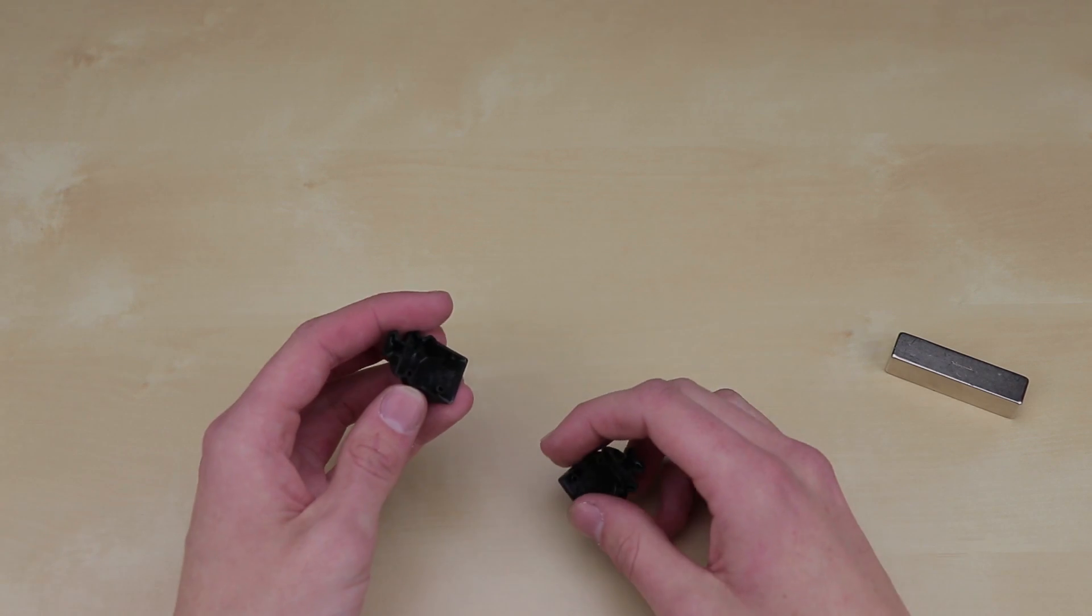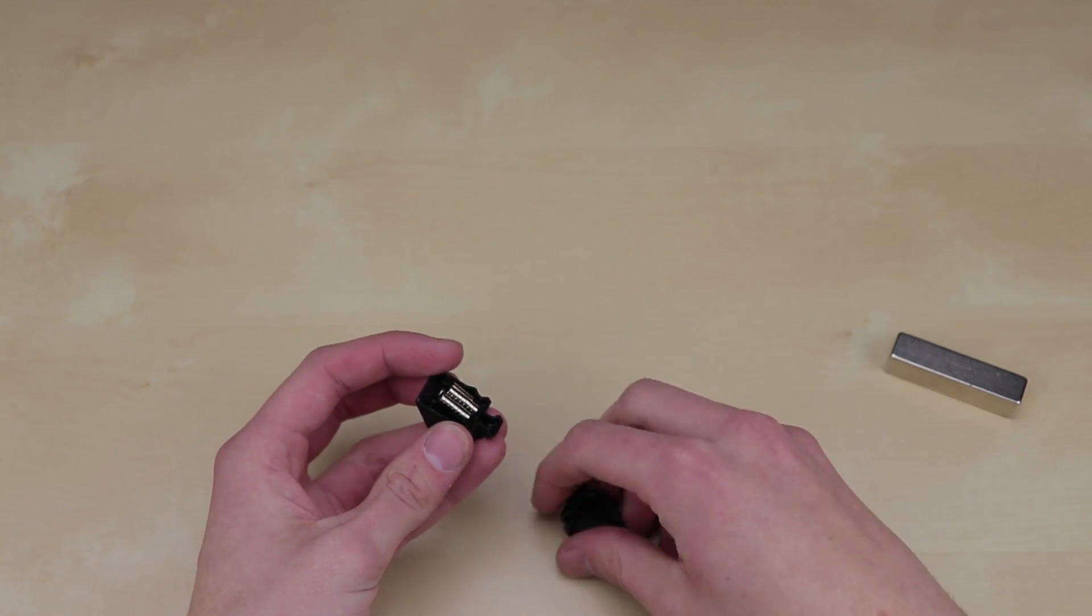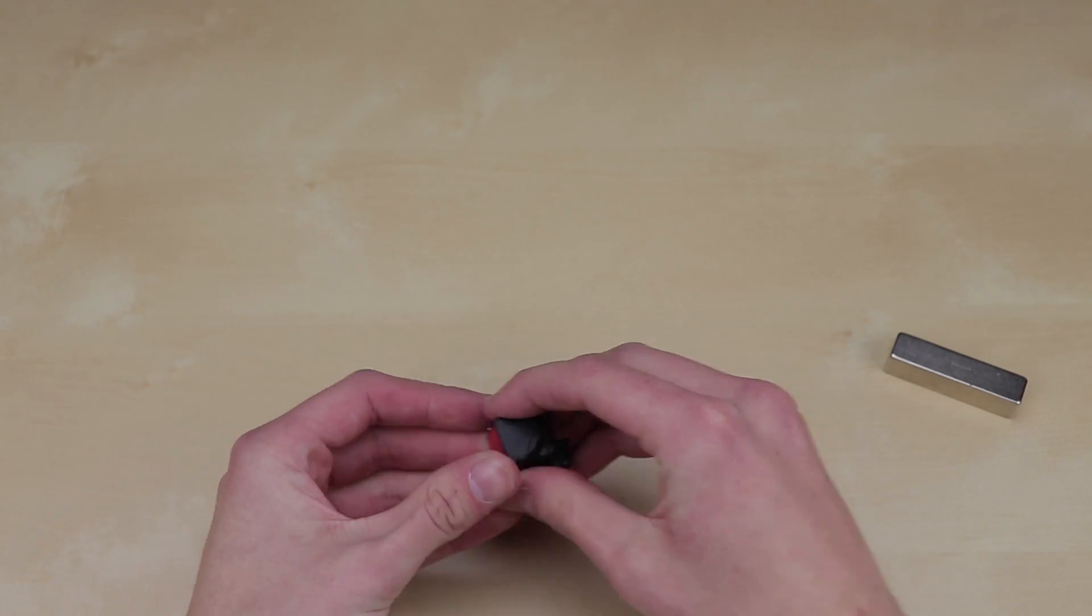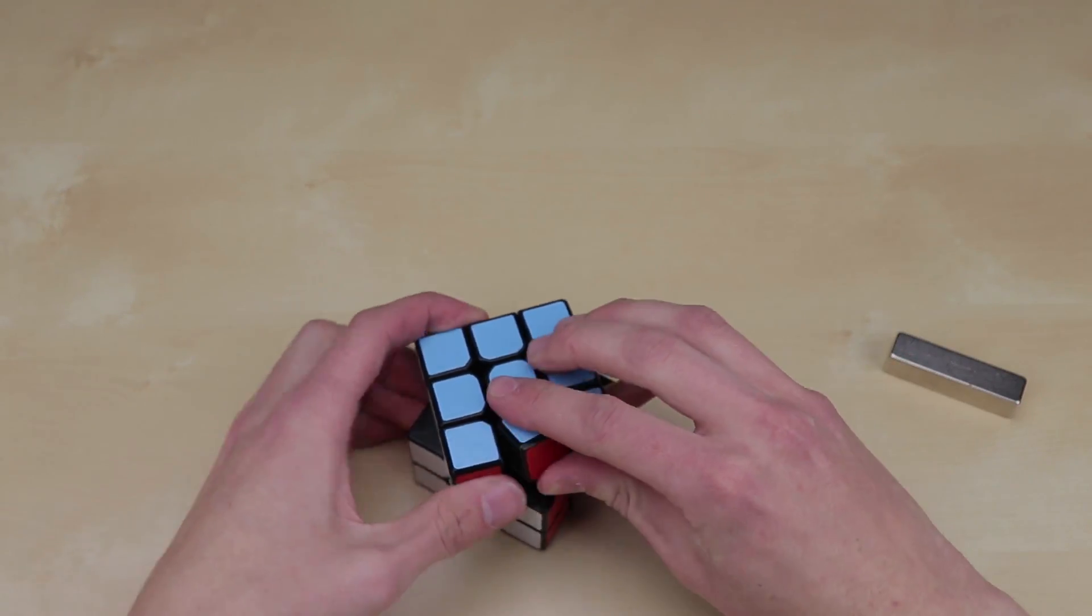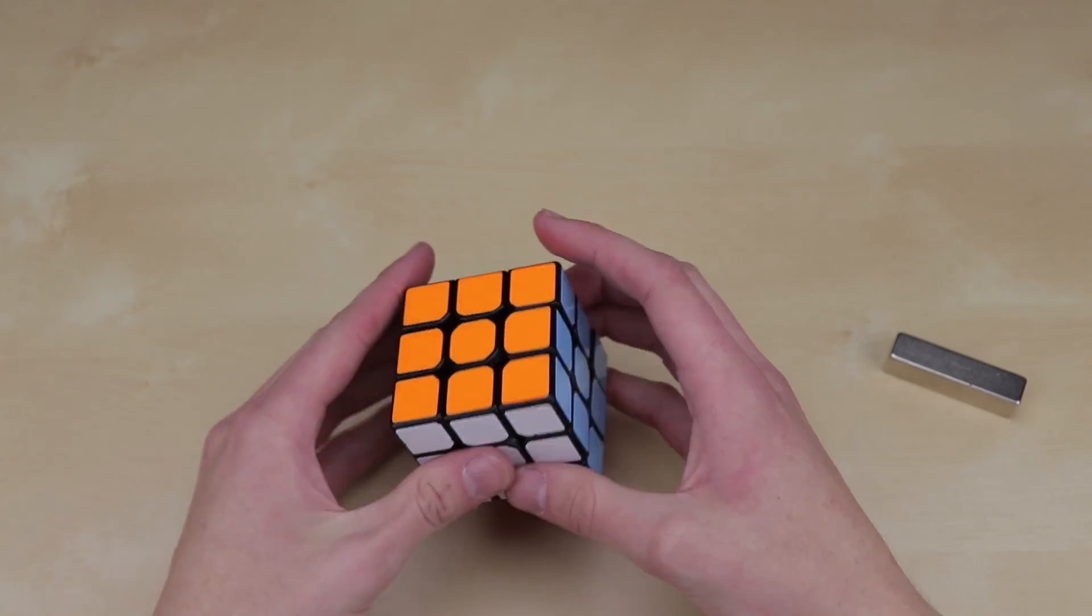So what I did is I got another cube that was not magnetized, in this case the Thunderclap, which used to be my main. Stuck some magnets in each of the pieces, just like that, and then assembled the cube. It actually happens to be very, very heavy, like three times as heavy as a normal cube. And now it's kind of rattly, you can hear it.